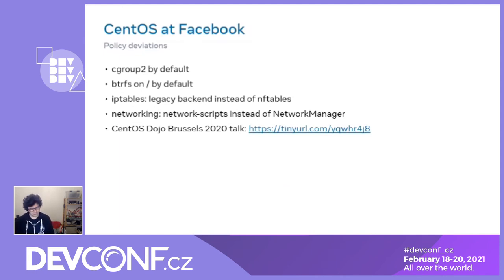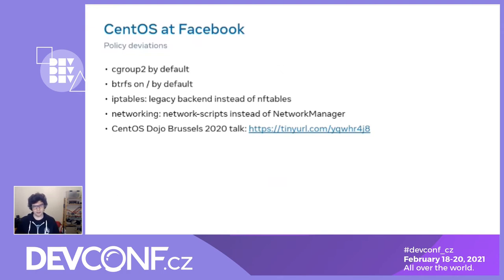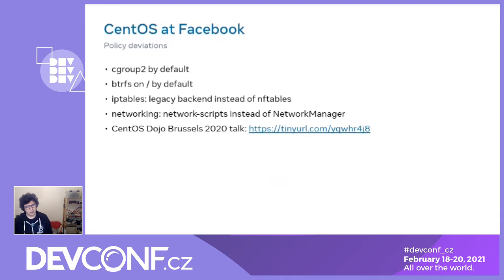There are a few more things we do that deviate from stock CentOS, either to better fit our environment or workload. For example, CentOS 8 comes with cgroup v1 by default and installs on XFS — because we do a lot of resource control work, we set up machines with cgroup v2 and use Btrfs as the root filesystem. Btrfs combined with cgroup v2 is important because it's what enables reliable IO control. We started making Btrfs the default when we switched to CentOS 8, and it has been a resounding success.